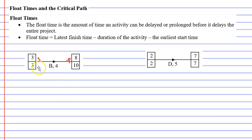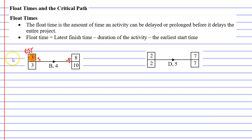If we look at the vertex on the left, we've got two numbers, and we're interested in the number at the top because it represents the earliest start time. This is really important because the plumber cannot start their job until three hours into the project. This means there must have been some previous activities that had to be completed before we could move on to activity B — maybe a digger needed to come in and dig some trenches before the plumber could lay the pipes.